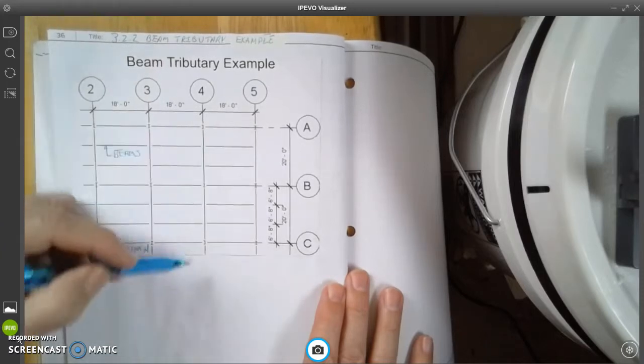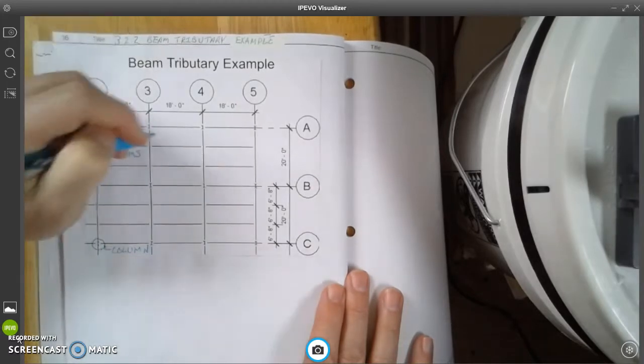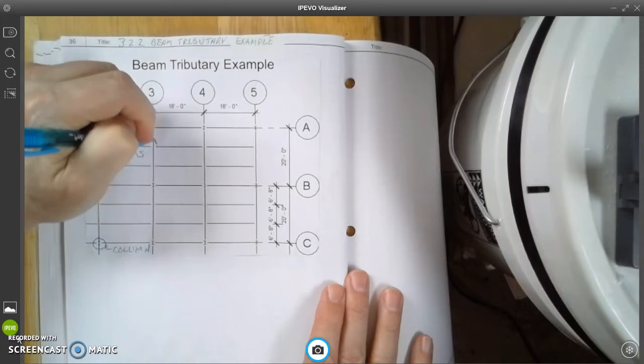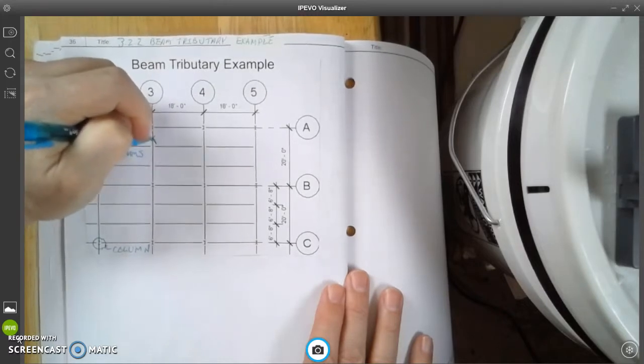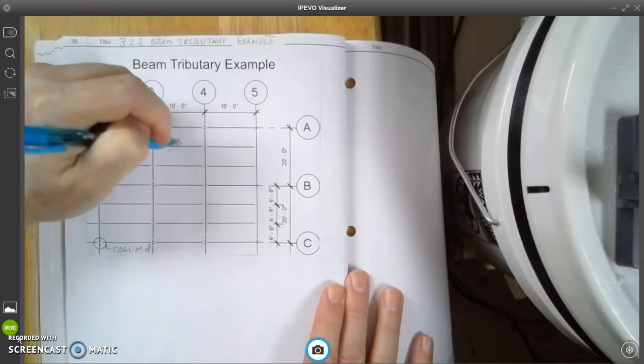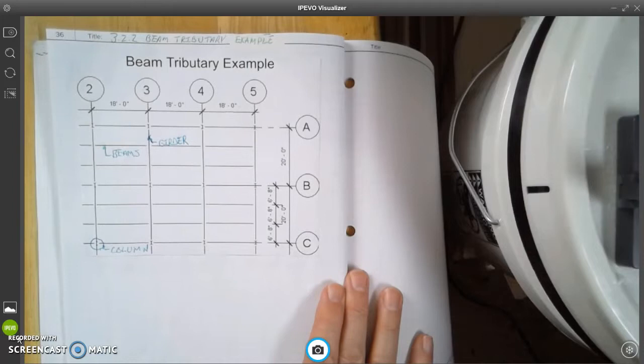And beams are supported by girders, and girders are these vertical lines, these four lines that we have in this roof plan right here. So I'm going to label this one as a girder. So now we know what all of these things are.